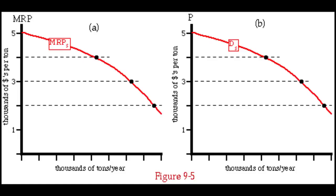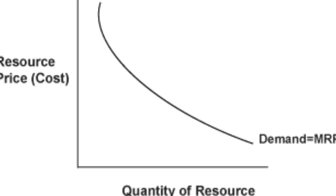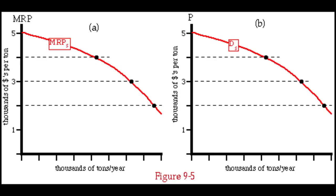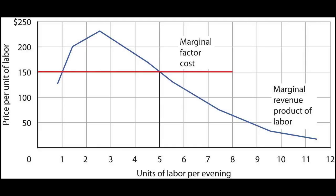This is because no firm would employ additional labor whose cost would exceed the revenue generated for the firm. The marginal revenue product, MRP, of a worker is equal to the product of the marginal product of labor, MP — the increment to output from an increment to labor used — and the marginal revenue, MR, the increment to sales revenue from an increment to output: MRP equals MP times MR.